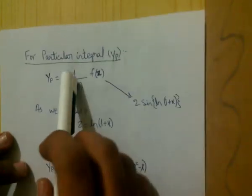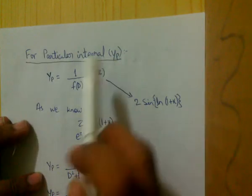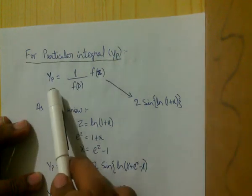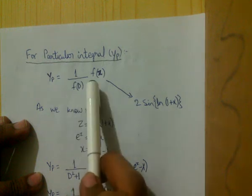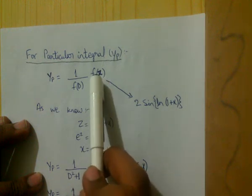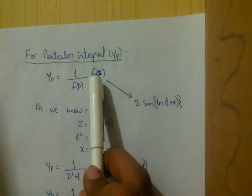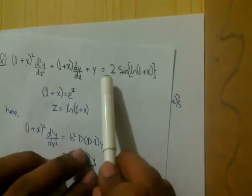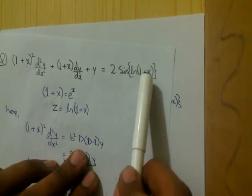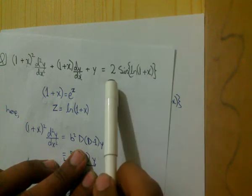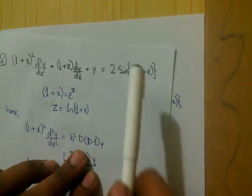Now the second part is to find the particular integral yp. Here yp = [1/f(D)]·f(z). The right-hand side is given as a function of x, so we first need to convert this function of x into a function of z.